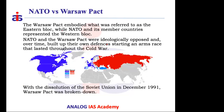Why did these two groupings form, and why did NATO and the USSR collide? The flag-bearing country of NATO is the USA; for the Warsaw Pact and USSR, it is Russia. These two countries actually fought on the same side in World War II — but immediately after winning, they became enemies, primarily due to an ideological divide.